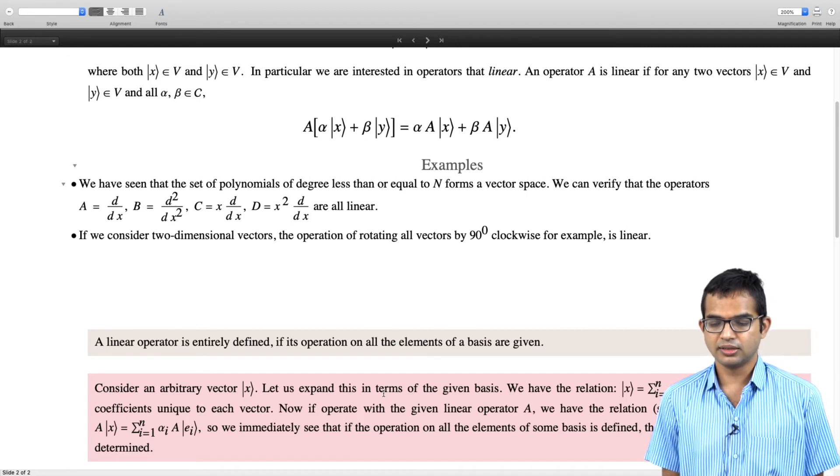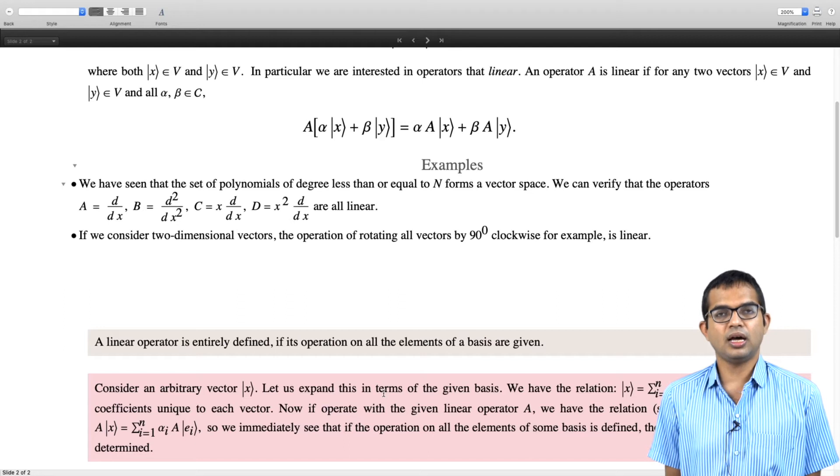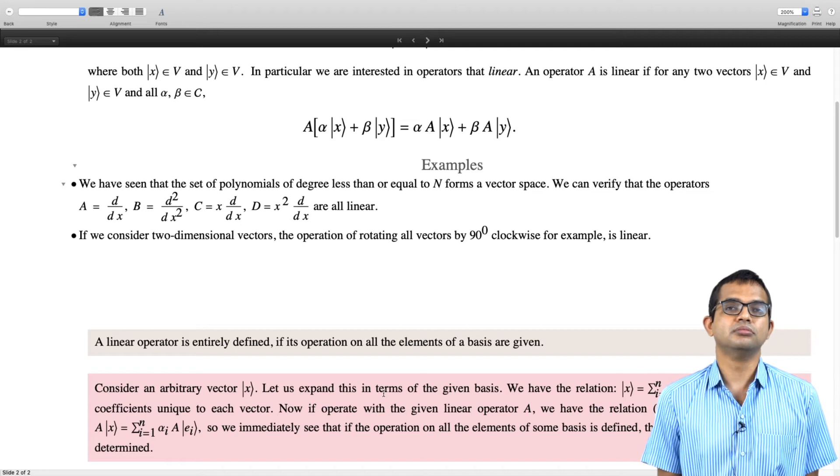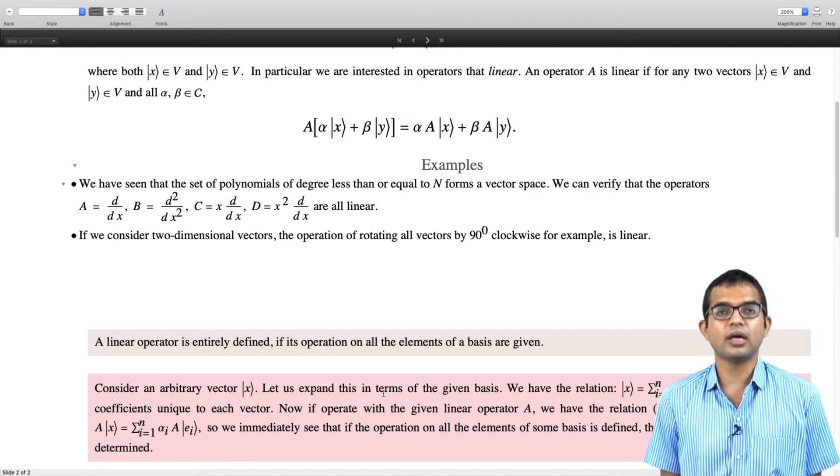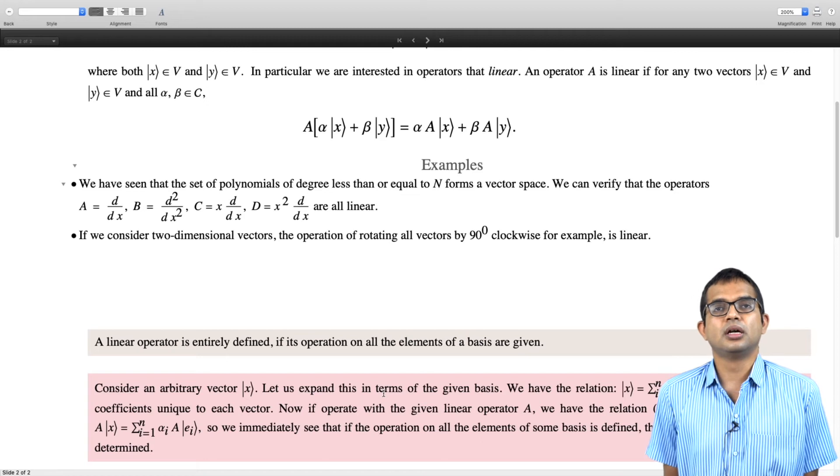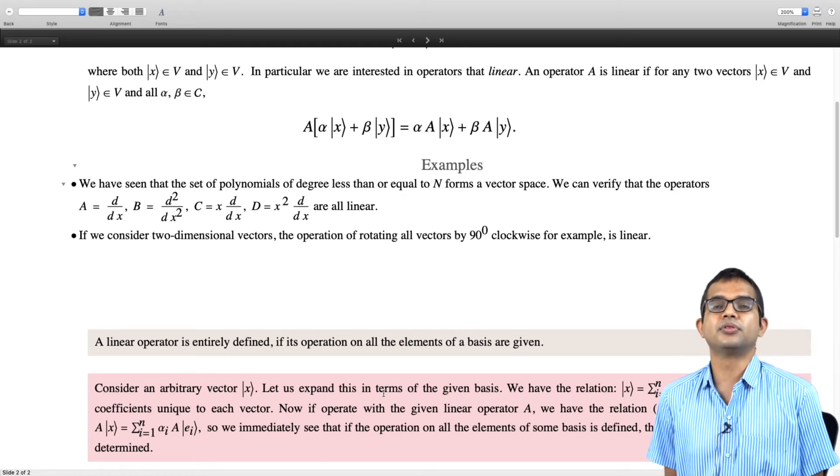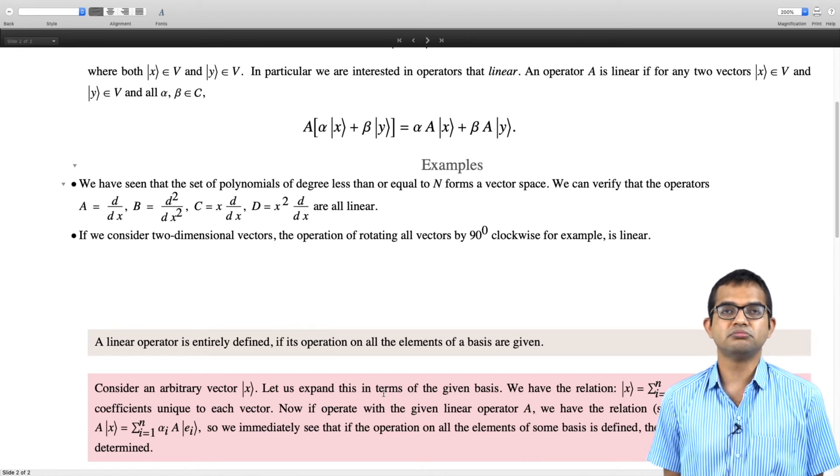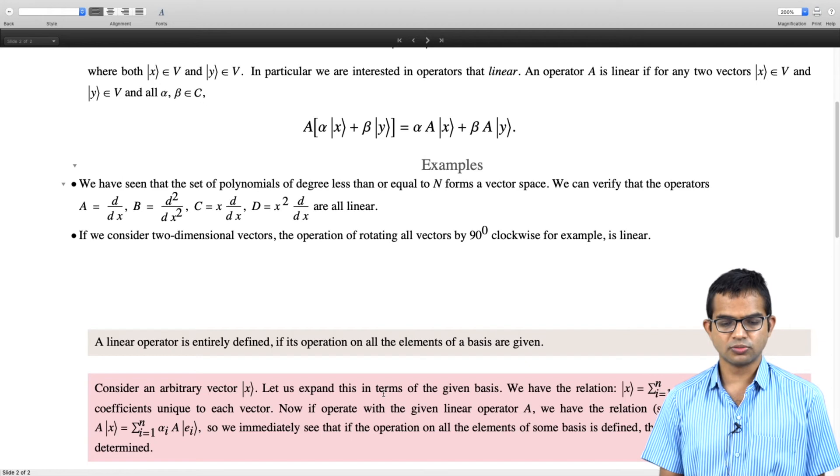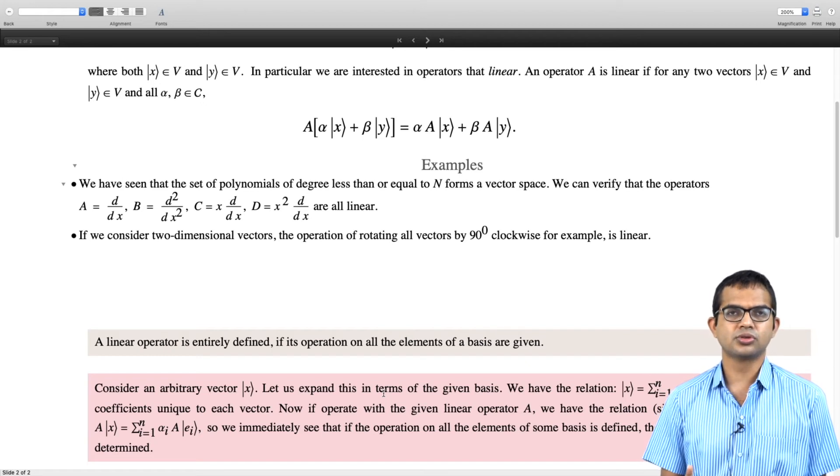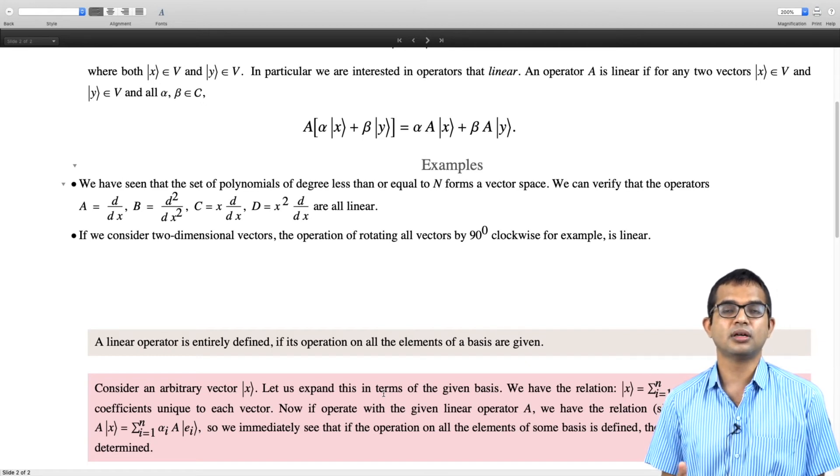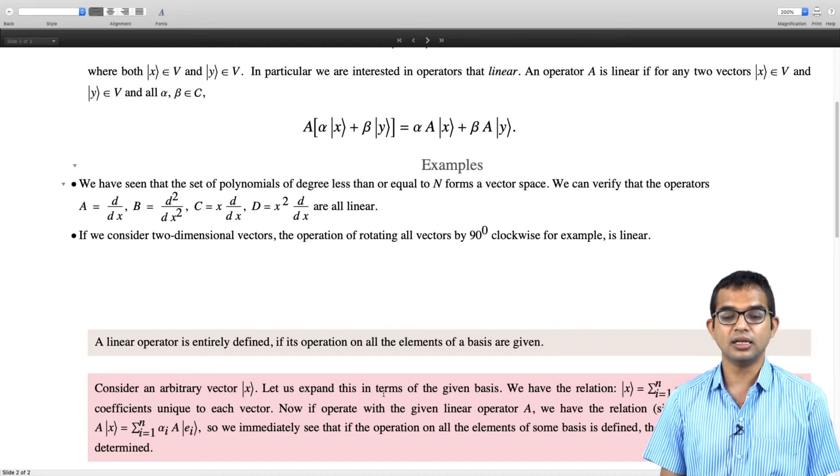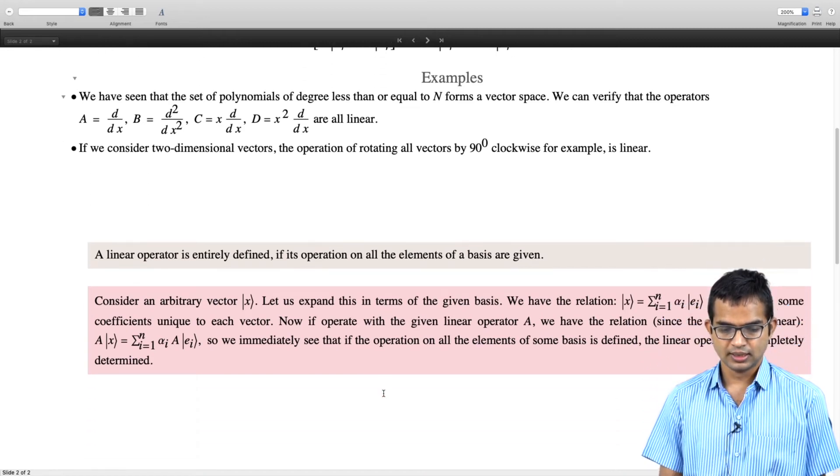We immediately see that if you know what A e_i is for every e_i, then you are able to find out what an operator A will do to any vector x. Therefore, this operator is entirely defined if you want to know what its operation is on every element of some basis. We have just used two key properties: one is that every vector in your space can be expanded in terms of the basis, and the second is the linearity of the operator.